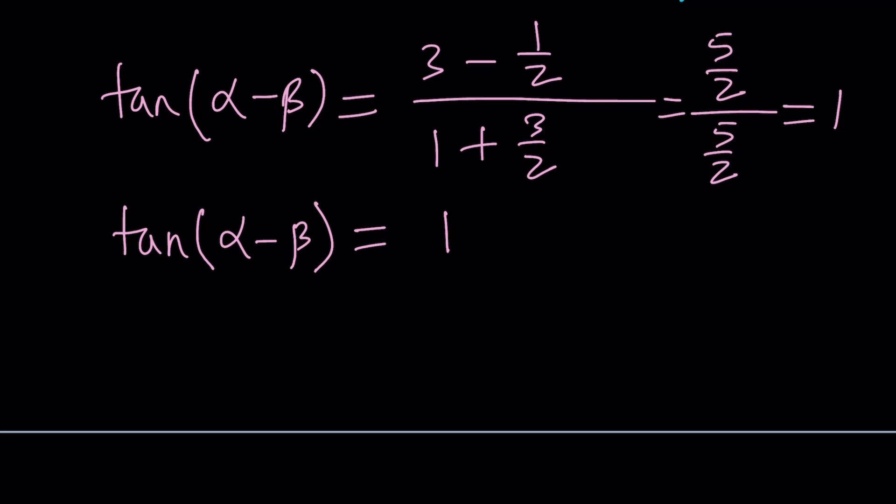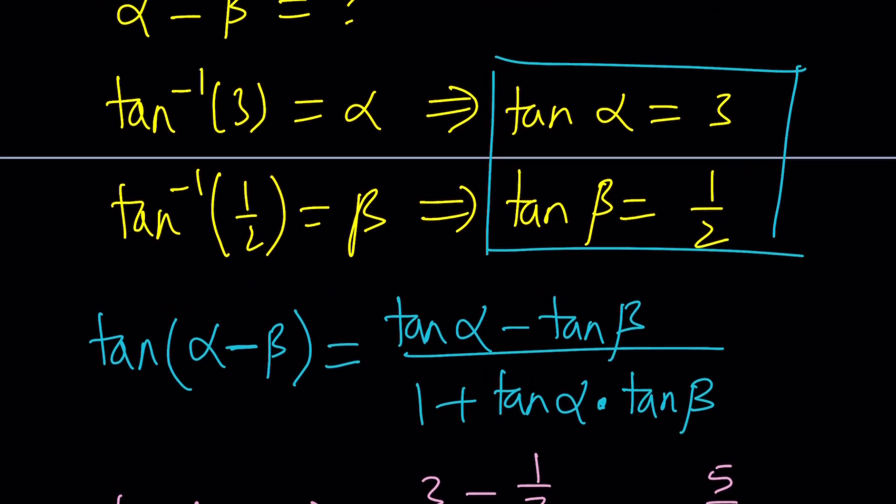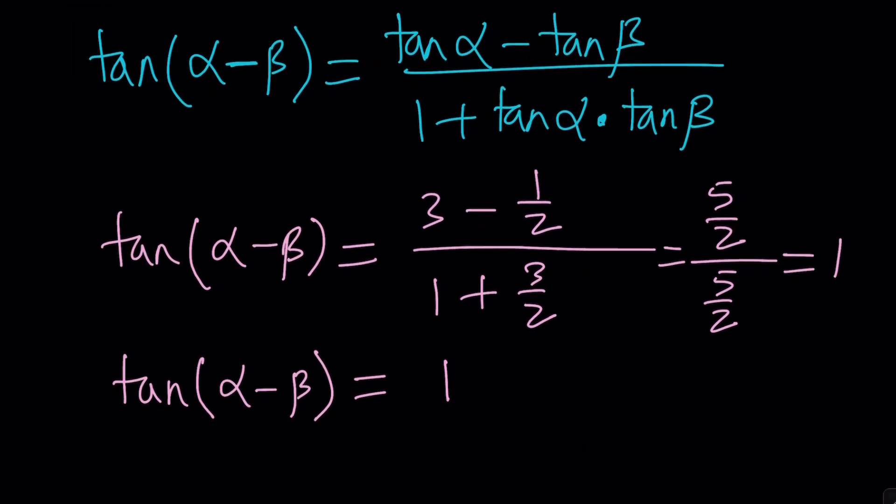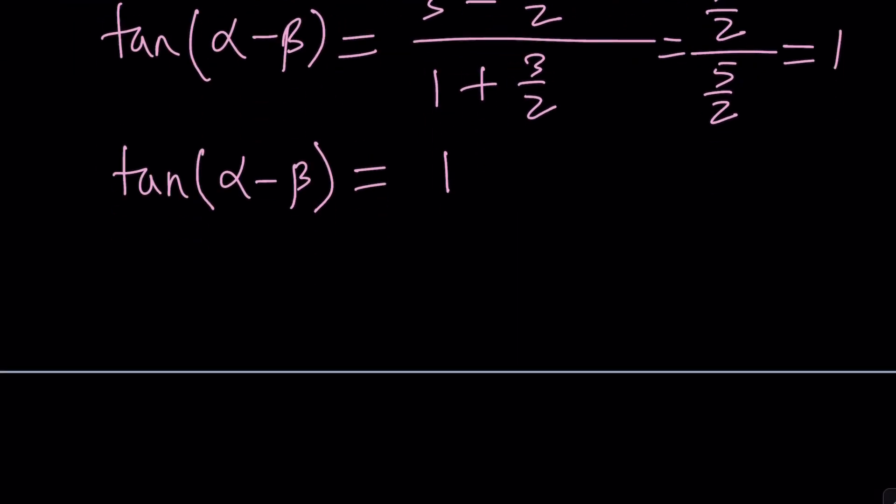Well, our goal, if you remember, is to solve for alpha minus beta, right? So how do we do that from here? Easy. Can we find an angle or angles whose tangent equals 1? And between 0 and 2 pi, there are actually two values. So we have to be careful.